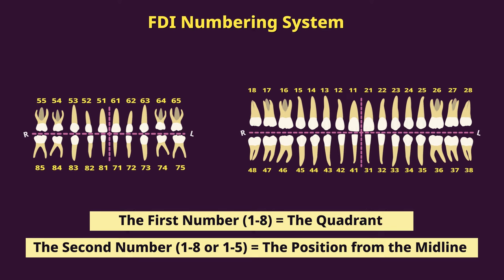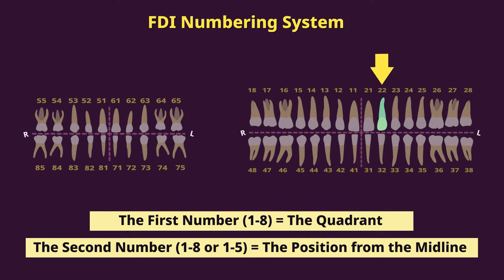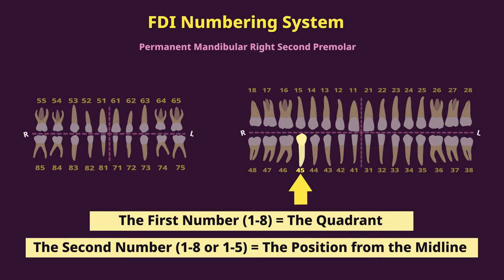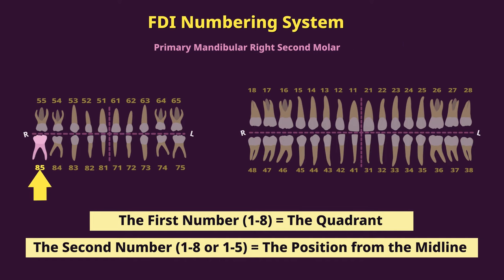These two numbers are spoken separately. So if you take this tooth, which is in the upper left quadrant and the second from the midline, instead of saying 'twenty-two,' you actually say 'two two.' Using the FDI Numbering System, instead of saying 'the permanent maxillary left lateral incisor,' you would say 'two two.' Or instead of saying 'the permanent mandibular second premolar,' you would say 'four five.' And instead of saying 'the primary mandibular right second molar,' you would say 'eight five.'